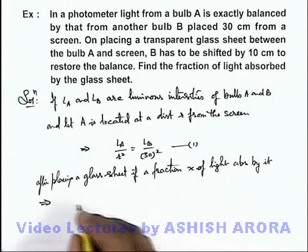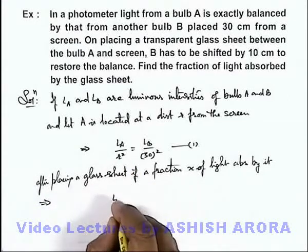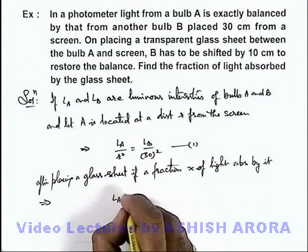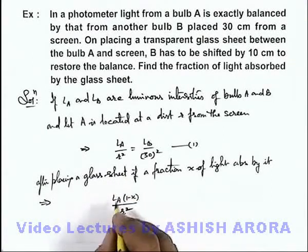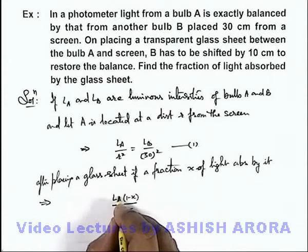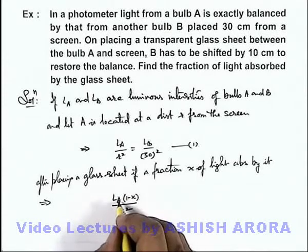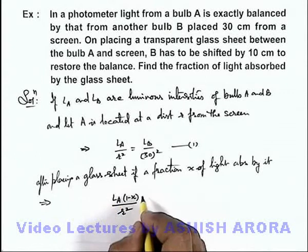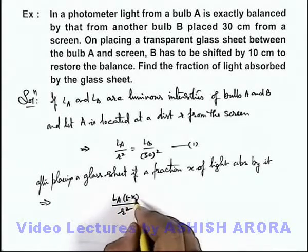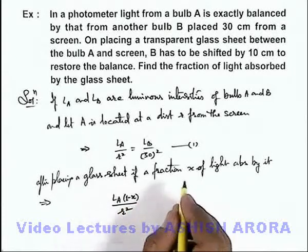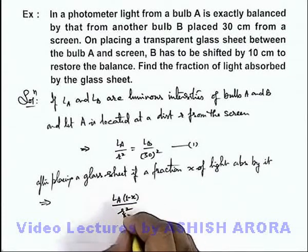So after placing the glass sheet, LA multiplied by 1 minus x divided by r square, because LA is the luminous intensity of bulb A in the direction of screen. If a fraction x of light is absorbed by the glass sheet, the one which is reaching screen is LA times 1 minus x by r square.